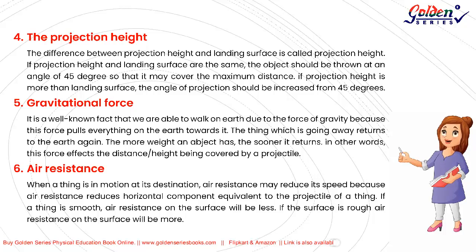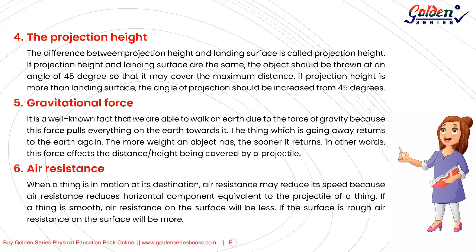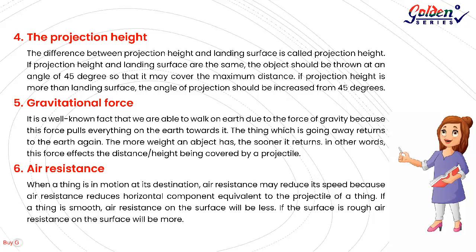6. Air Resistance. When a thing is in motion toward its destination, air resistance may reduce its speed, because air resistance reduces the horizontal component of a projectile. If the surface of an object is smooth, air resistance will be less; if the surface is rough, air resistance will be more.